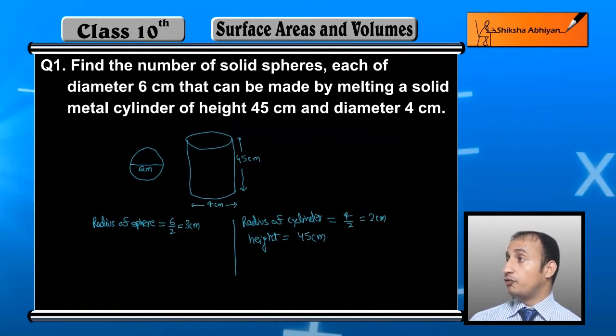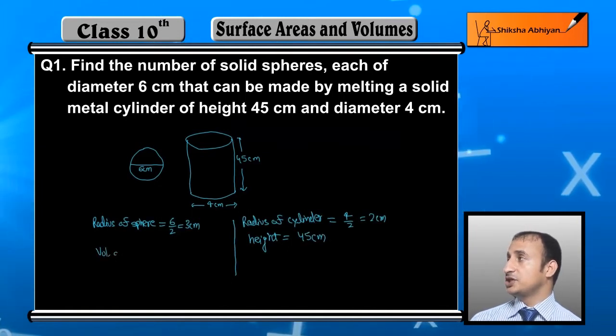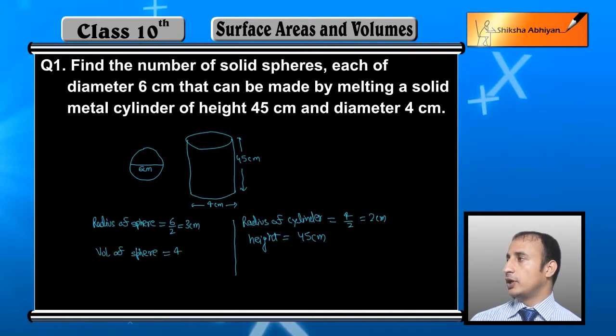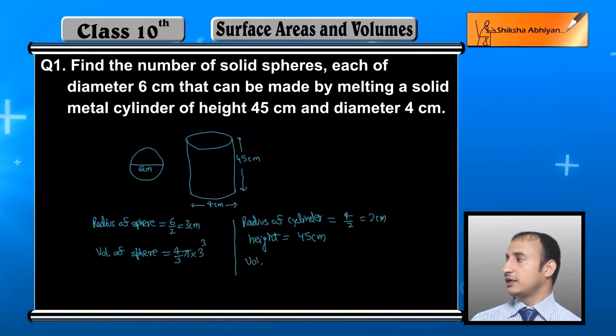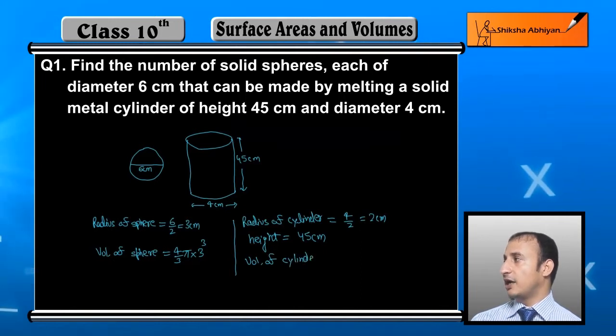Now we need the volumes, because the volume of the entire cylinder will equal the volume of however many spheres we make. Volume of sphere is 4 upon 3 pi r cube where r is 3, and volume of cylinder is pi r square h, where r is 2 and h is 45, so pi r square that is 2 square into 45.